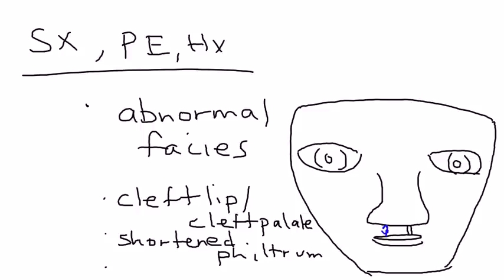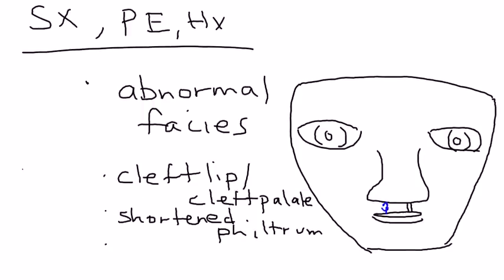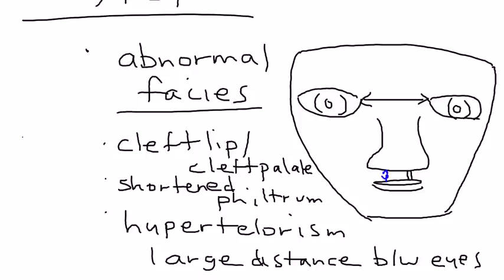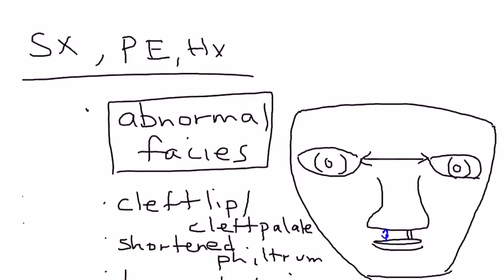Another characteristic facial abnormality is hypertelorism. Hypertelorism basically means there's a large distance between the eyes. In this diagram I tried my best to exaggerate it to show that there's a very large distance between the eyes. Those are some of the key abnormal facies findings in DeGeorge syndrome.